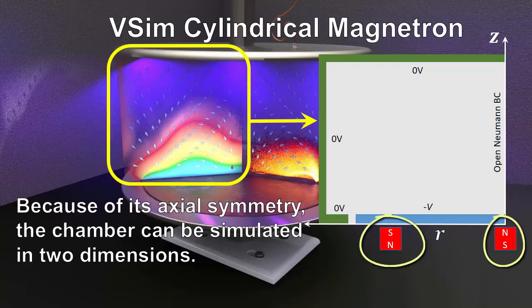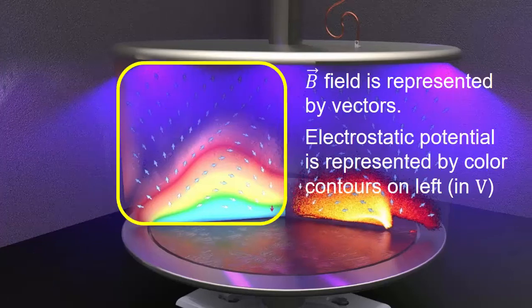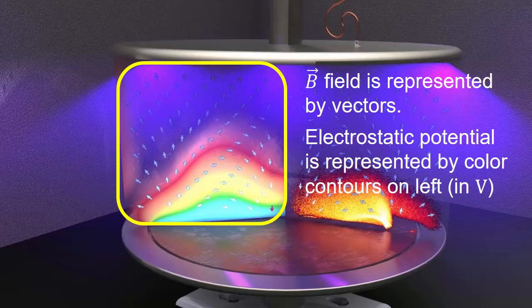Two magnets sit below the cathode in blue on the bottom of the chamber. This color plot, overlaid on the structure, shows the electron number density. This plot on the left shows the electrostatic potential in color. Blue is low and red is high. The magnetic field is represented by vectors.